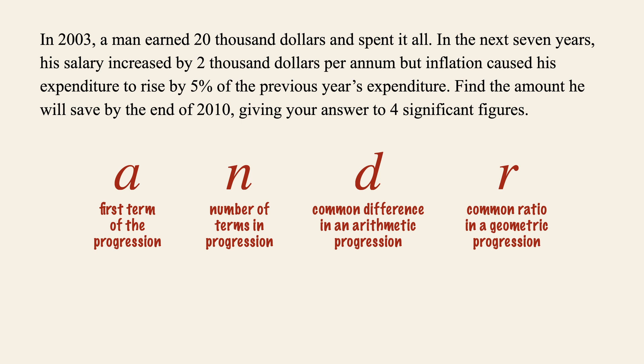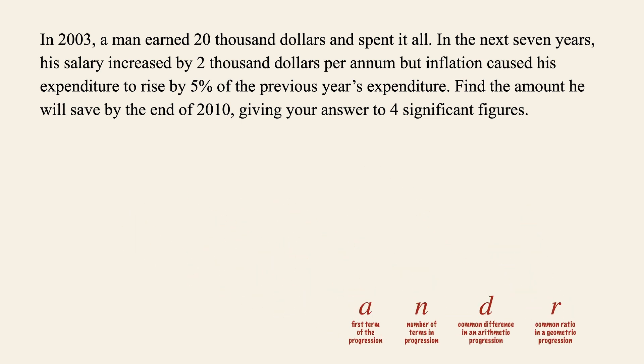So we need to find the value of n, which is the number of years between 2003 to 2010. This is done by taking 2010 minus 2003 plus one, giving n = 8. The reason we add one is because this person is saving till the end of 2010.